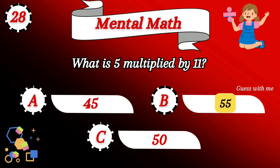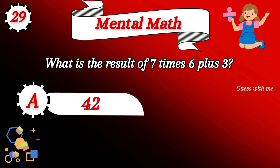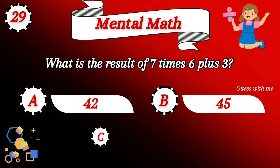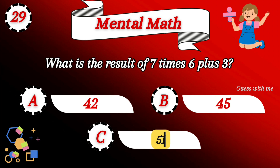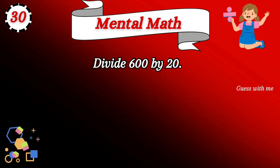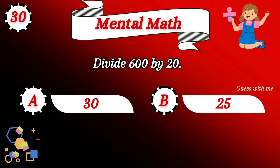The answer is 55. Your next question: what is the result of 7 times 6 plus 3? 51 is the answer. The 30th question: divide 600 by 20.